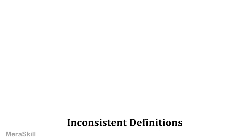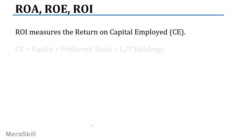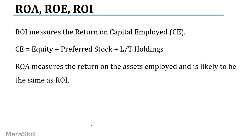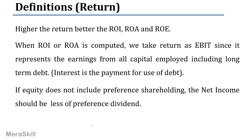A brief discussion on definitions: sometimes there is a small difference in interpretation of equity and assets. Return on investment measures the return on capital employed, which includes all long-term funds — ordinary shareholders' capital including paid-up amount, premium, and retained earnings — as well as preference stock and other long-term loans. Return on assets measures the return on assets employed and is likely to be the same as ROI. ROI measures the returns to equity shareholders. In each case the denominator could have different definitions.